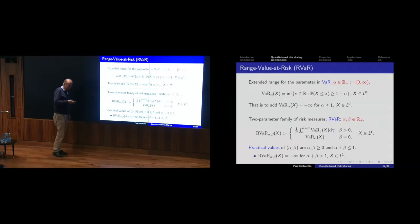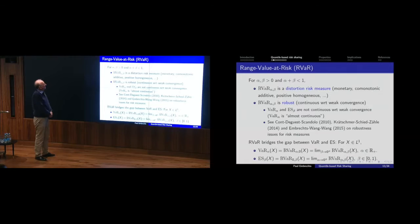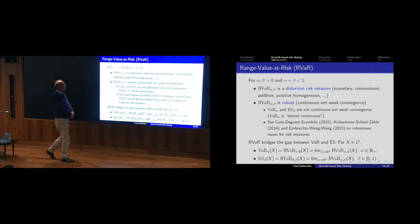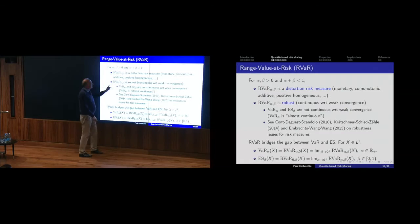Both VaR and Expected Shortfall are boundary cases of Range VaR. If alpha equals zero, it's Expected Shortfall; if beta equals zero, you get Value at Risk. So this two-parameter family of risk measures interpolates between the two risk measures I'm interested in. For alpha and beta strictly positive with sum less than 1 — the standard case — it is a distortion risk measure, co-monotonically additive, and robust in the sense of being continuous with respect to weak convergence.